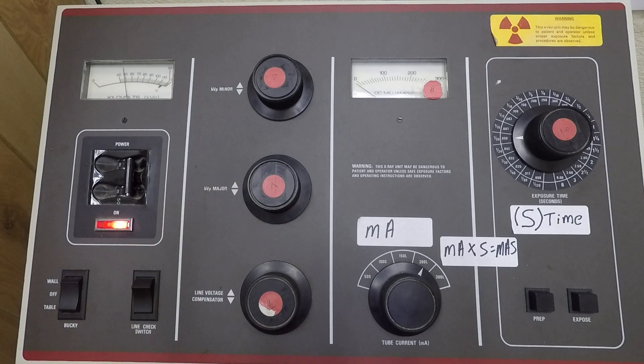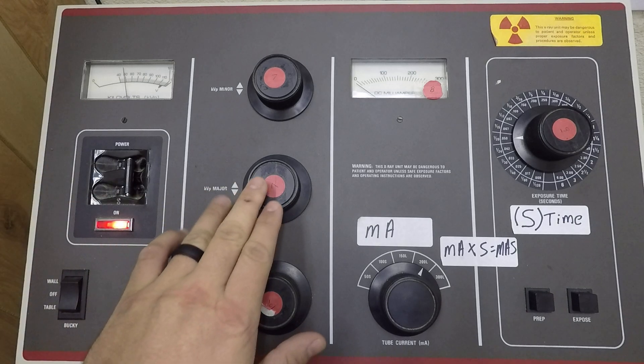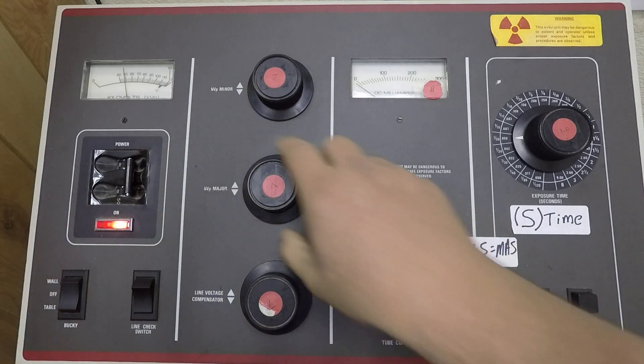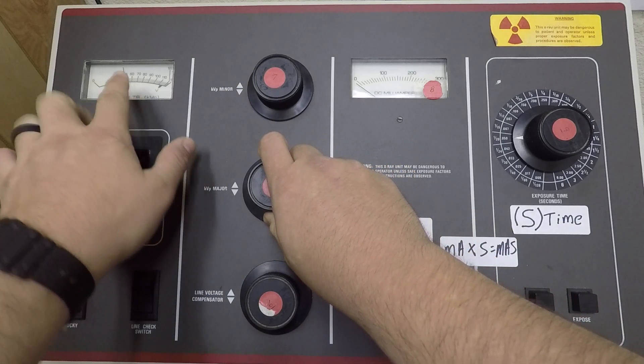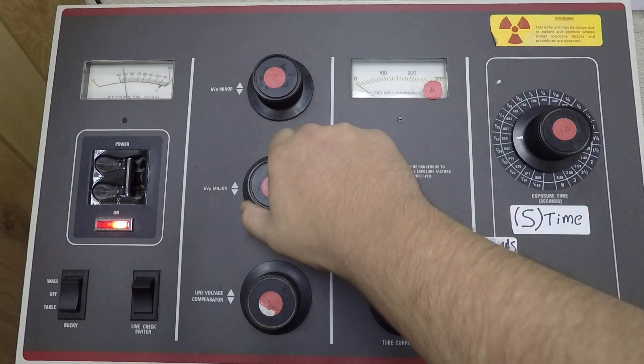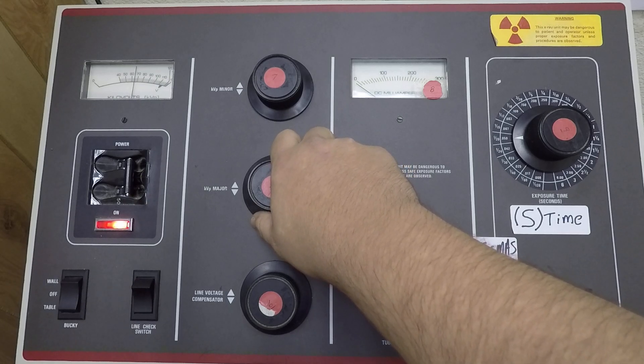When we set KV on, at least on our control console, we have a major adjustment and a minor adjustment. If you look at the KVP meter up here, the major adjustment moves us by a lot. I was just at 50, I made one click, and now I'm at roughly 66.